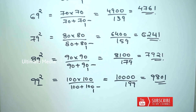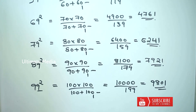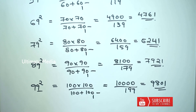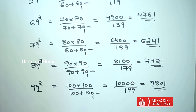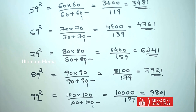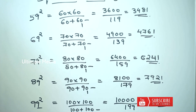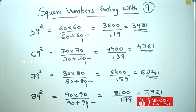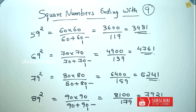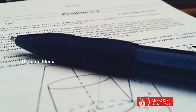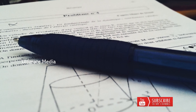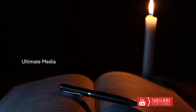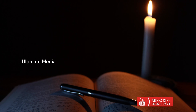So 99 square is 9801. Now we have seen how to calculate squares of numbers ending with 9 — simply convert to the nearest 10 and use the zero formula. Please share this video, like this video, subscribe, and I'll see you in the next video. Thank you!